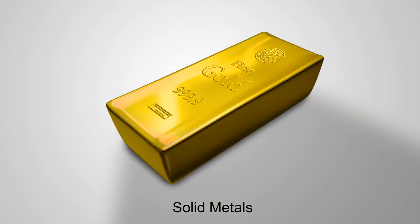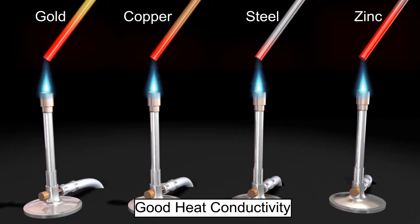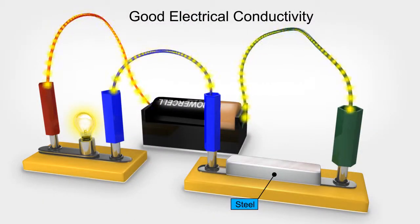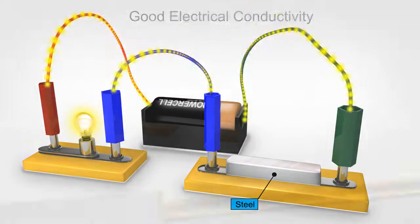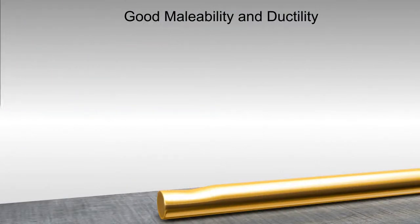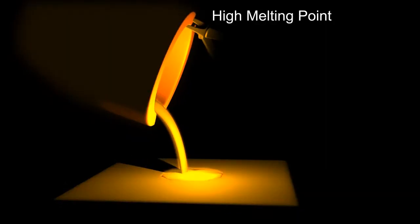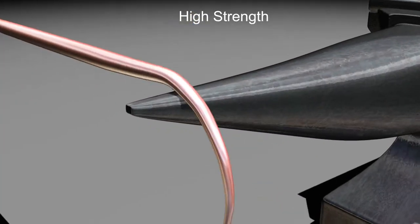Metals are generally solids and have good heat and electrical conductivity, good malleability and ductility, high melting point, and high strength.